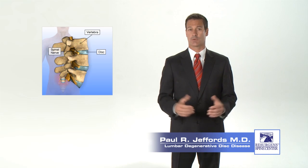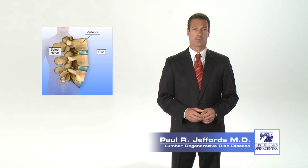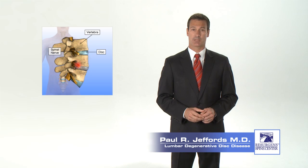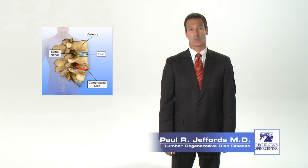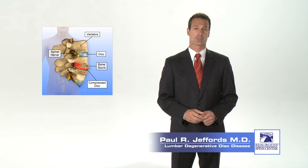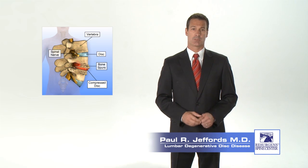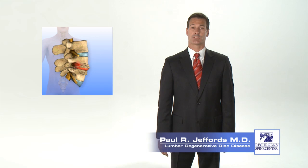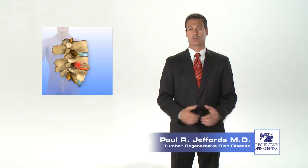The stress is transferred to the bony end plates of the vertebrae above and below the disc. As the bony end plates see more stress, they react by forming hard, dense bone to absorb that stress. This dense bone shows up as thick white bone on an x-ray and is called sclerosis. The stresses on the bone can also result in bone spur formation. Sometimes the bone spurs can press on the spinal nerves in addition to the bulging disc, causing additional leg pain.